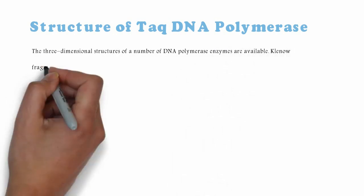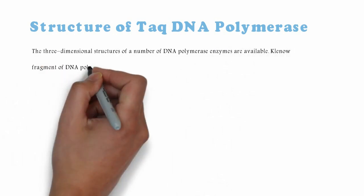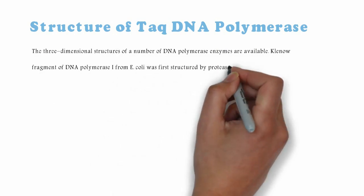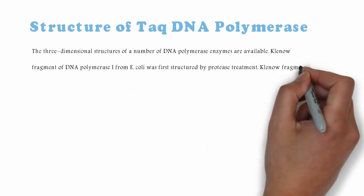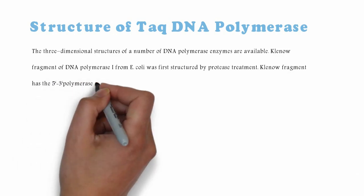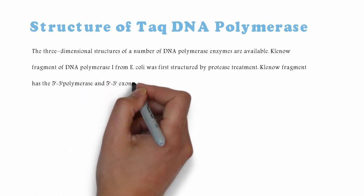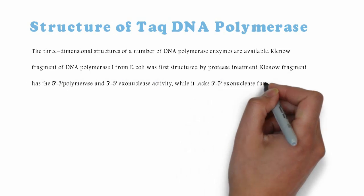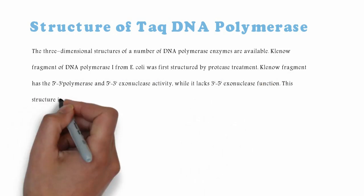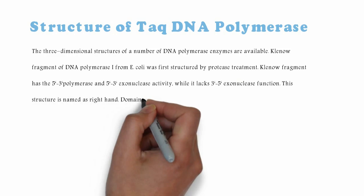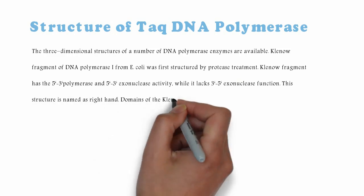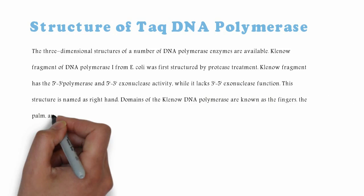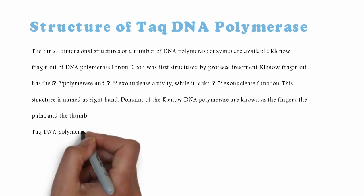The Klenow fragment of DNA Polymerase I from Escherichia coli was first structured by protease treatment. The Klenow fragment has 5' to 3' polymerase and 5' to 3' exonuclease activity, while it lacks 3' to 5' exonuclease function. This structure is named the right hand. Domains of the Klenow fragment polymerase are known as the fingers, the palm, and the thumb.